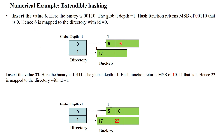We insert the third value 6, which has binary string 00110. With global depth 1, the most significant bit is 0, so we store 6 at directory index 0, which points to the same memory bucket. The bucket still has empty space, so 6 is stored there.